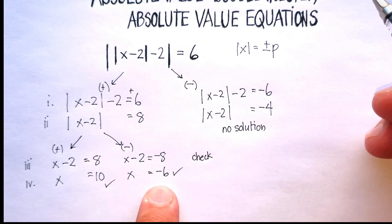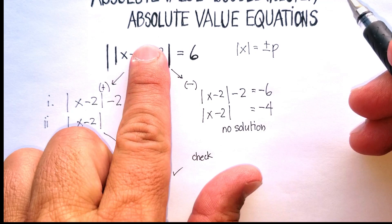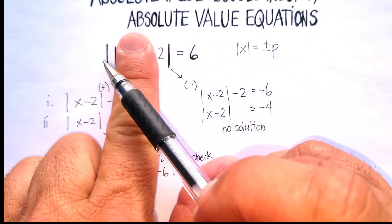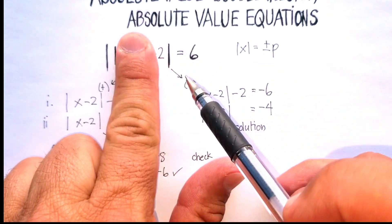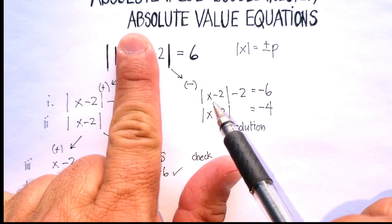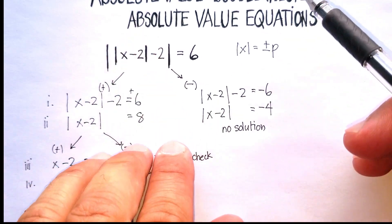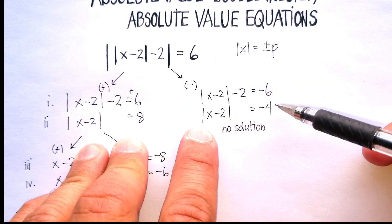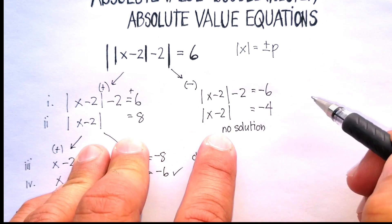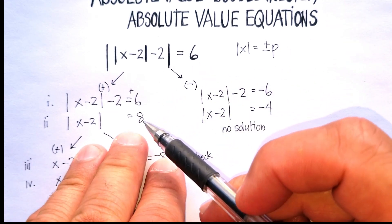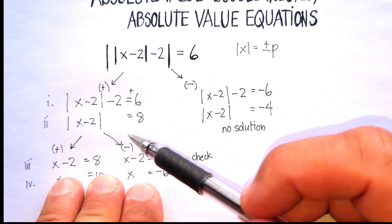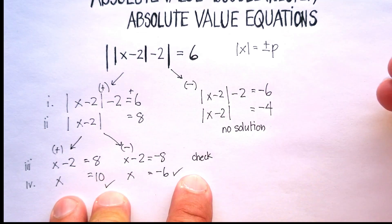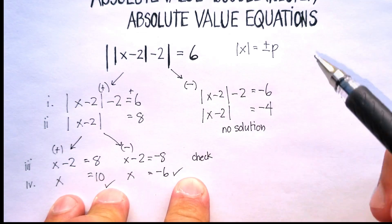Remember what you do — two stages. You ignore the nested value first; nested means inside. Just do the outside part with positive and negative values. Go ahead and simplify, and isolate the absolute value by itself. If it's a negative, you have no solution. If it's positive, you break it up into positive and negative cases. Solve, and then check. I hope that was helpful.